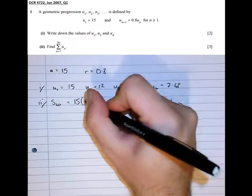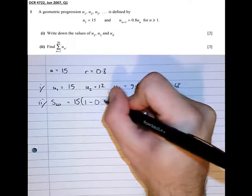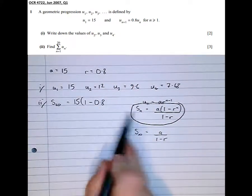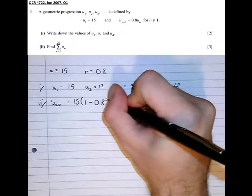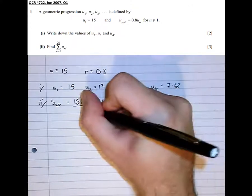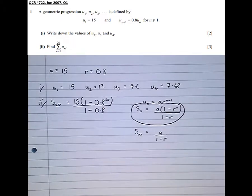So the sum of the first 20 terms is a, 1 minus 0.8 to the power of n. And we can see here that n is 20 over 1 minus 0.8, over 1 minus r.